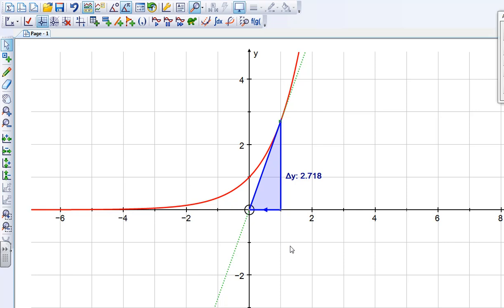This video demonstrates how we can use Autograph to visualize the gradient function of log x. I've started off with the curve y equals e to the x here, and I've set up a triangle which will be one unit in the x direction, so delta x will always be one,